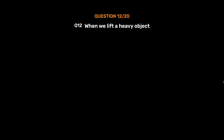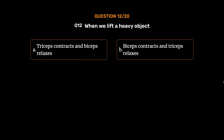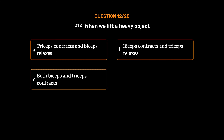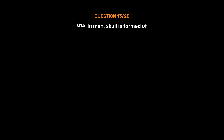Question No. 12. When we lift a heavy object: Option A. Triceps contracts and biceps relaxes, Option B. Biceps contracts and triceps relaxes, Option C. Both biceps and triceps contract, Option D. Both biceps and triceps relax. The correct answer is Option B, biceps contracts and triceps relax.